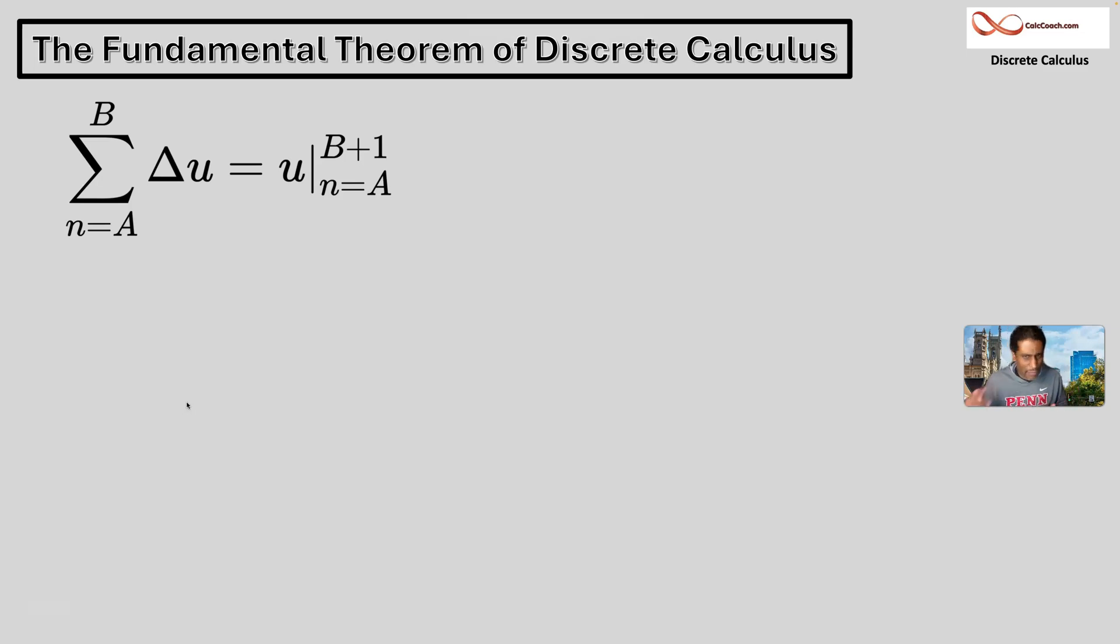And then we just evaluate at these endpoints. But be very careful, those endpoints are not your standard endpoints, it's not the beginning and the ending of the summation counter, it's the beginning counter taken away from the ending counter plus one.